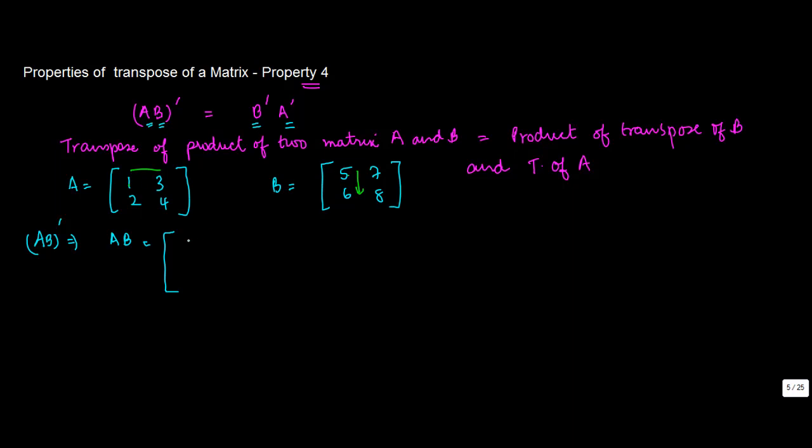So 1 into 5, 5 plus 3 into 6, 18. Then first row into second column: 1 into 7, 7 plus 3 into 8, 24. Then 2 into 5, 10 plus 4 into 6, 24.